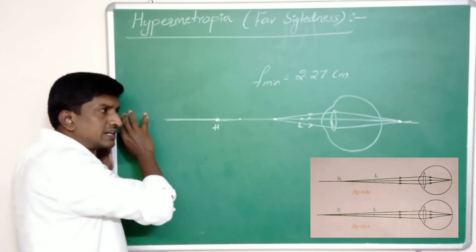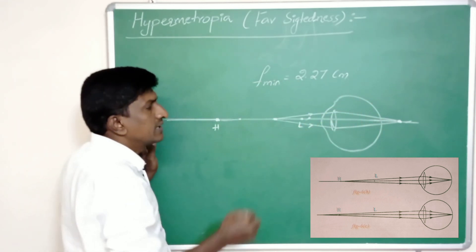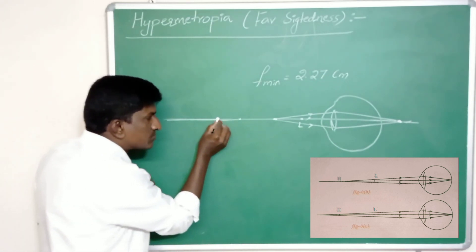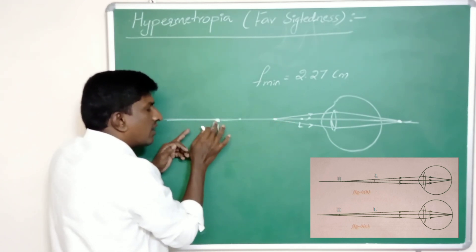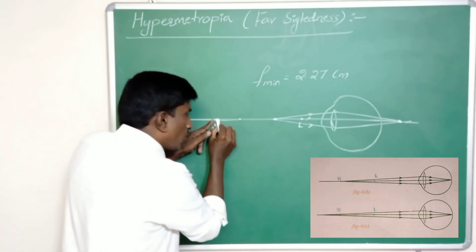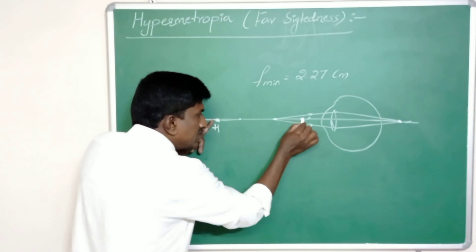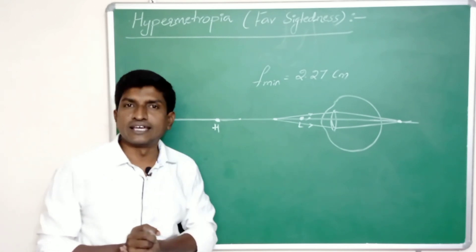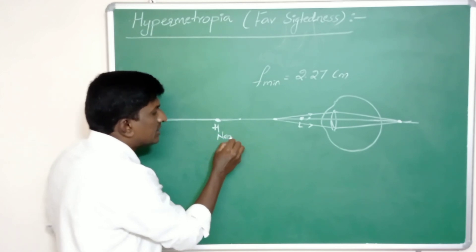Due to this the person cannot see closer objects clearly. But for all objects outside point H, the person can see clearly because images are formed on the retina. Closer than point H, from H to the least distance of distinct vision, the person cannot see clearly. This point H is called the near point.